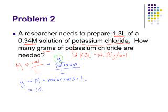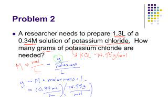The molarity that we wanted was 0.34 moles per liter. The molar mass was 74.55 grams per mole, and the volume in liters was 1.3 liters. If you look at your units, which you always should, the liters cancel out and the units of moles cancel out leaving us with units of grams. So we know we set the problem up correctly.